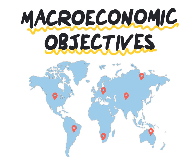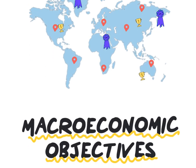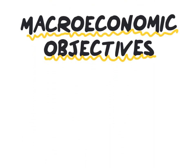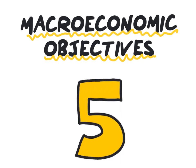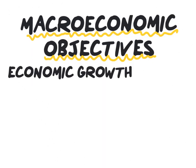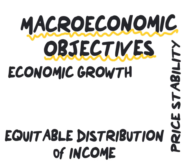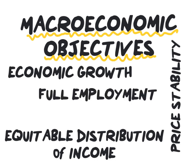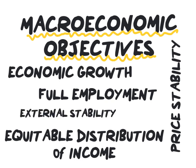As these objectives are used throughout the globe, this enables us to determine how we perform compared to other economies. These objectives can be seen as performance measurements which enable us to determine the health of an economy. In economics, the five broad macroeconomic objectives are: economic growth, price stability, equitable distribution of income, full employment, and external stability.